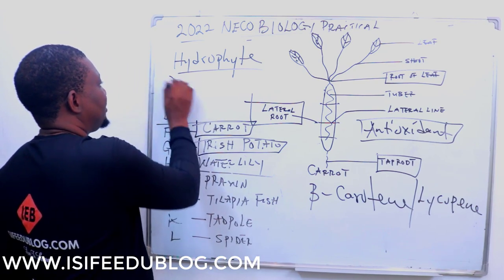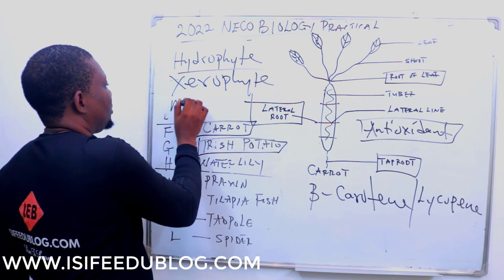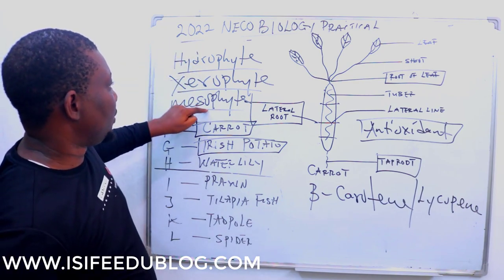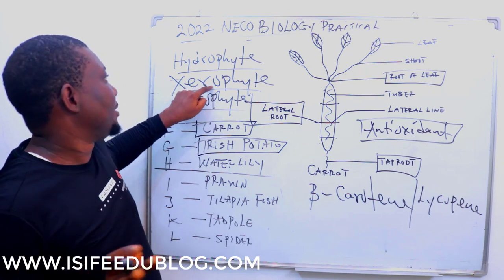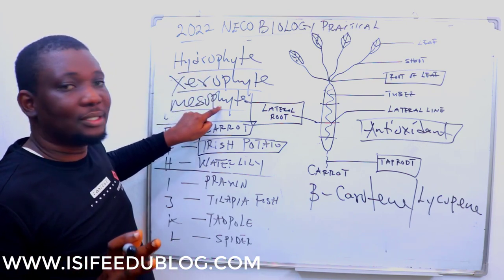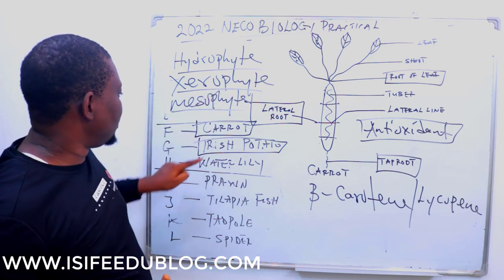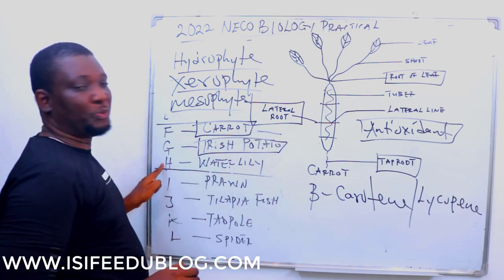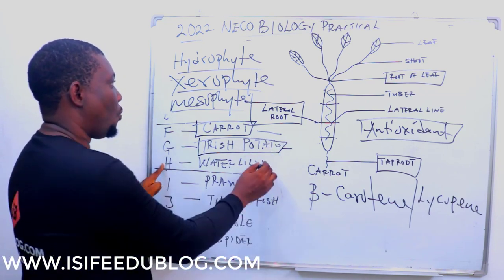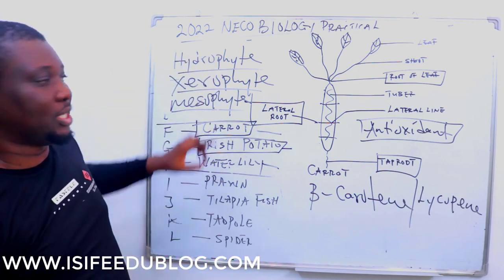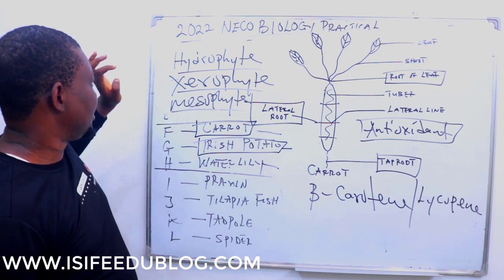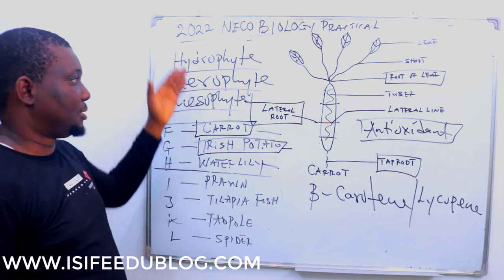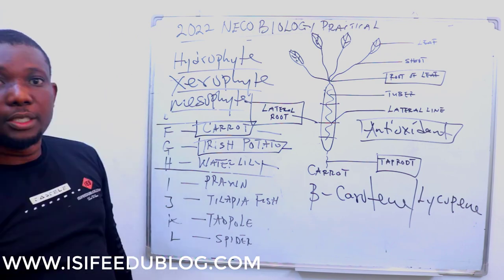The three habitat types are: hydrophytes, xerophytes, and mesophytes. Mesophytes are in between hydrophytes and xerophytes — not extremely dry, not extremely aquatic. In terms of habitat classification: specimen F (carrot) is a mesophyte, specimen G (Irish potato) is also a mesophyte, and specimen H (water lily) is a hydrophyte. Please take note of this.